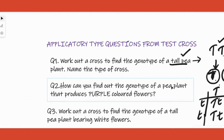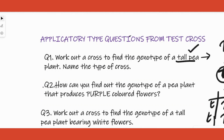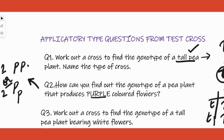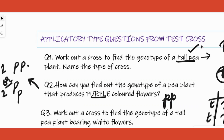Now try question two by yourself: can you find out the genotype of a pea plant that produces purple colored flowers? From Mendel's work, one of the seven characters he studied was flower color, and purple was dominant over white. So the purple plant can be either PP or Pp, and you need to cross it with white flowers (pp). If the parent is homozygous dominant, all progeny will show purple; if heterozygous, half will be purple and half will be white.